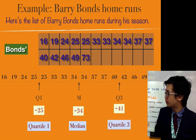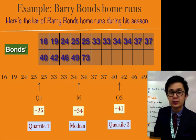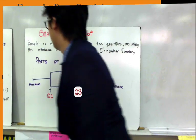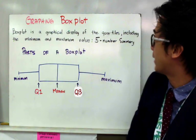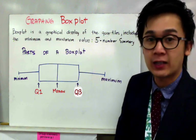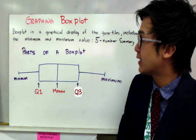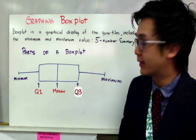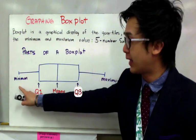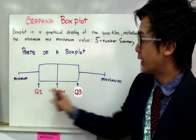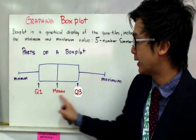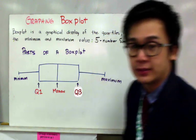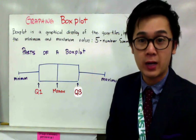Now that we have our quartiles, we are ready to construct our box plot. A box plot, by definition, is a graphical display of your quartiles, including the minimum and the maximum value. It's also known as the five-number summary in statistics. Once you've found your five-number summary, you're ready to construct your box plot. The parts of a box plot include the minimum value at the far end, a box representing Q1, the median, and Q3, and the maximum value.